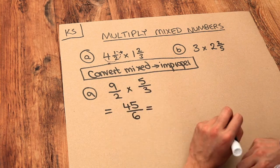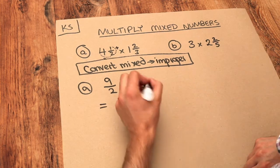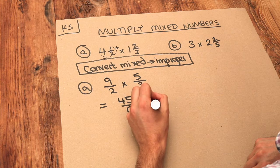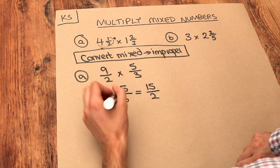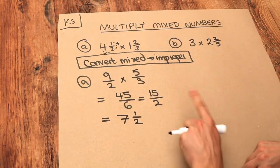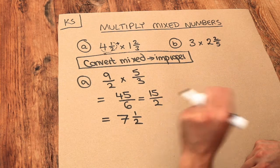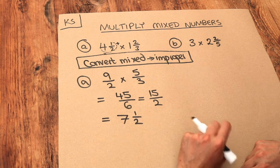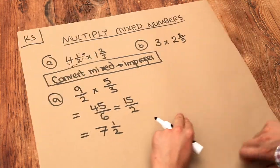We can simplify that fraction because both have a common factor of three. Divide the top by three to get 15, divide the bottom by three to get two. You could convert that back into a mixed number: seven and a half. I got that by doing 15 divided by two. Two goes into 15 seven whole times, with a remainder of one as the numerator.